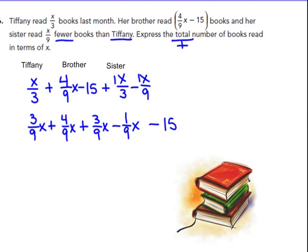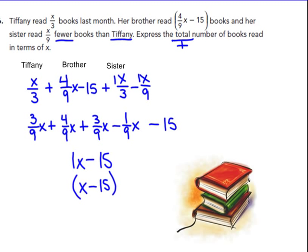Adding and subtracting: 3 ninths plus 4 ninths is 7 ninths. 7 ninths plus 3 more ninths is 10 ninths. Minus 1 ninth gives 9 ninths. Well, 9 ninths is just 1X — you can write 1X or just X. And the numerical constant left is negative 15. So the answer is X minus 15, with the label books — or (1X − 15) books. Express the total number of books read in terms of X — we've done that by putting all like terms together.